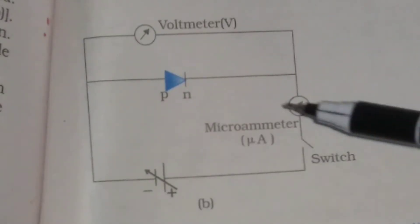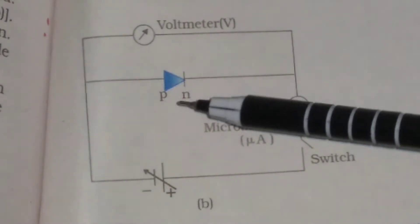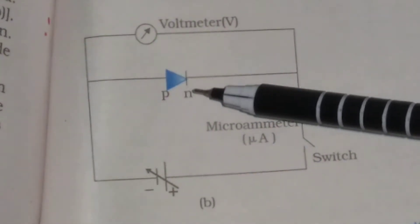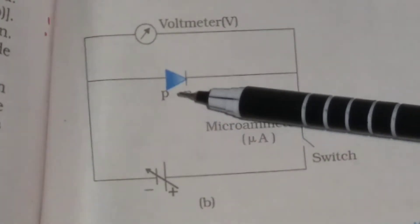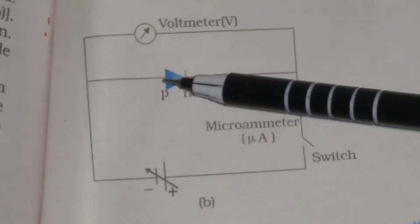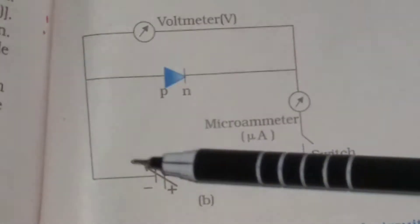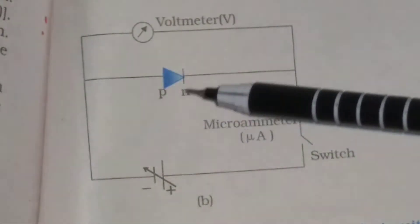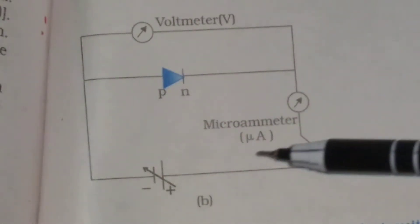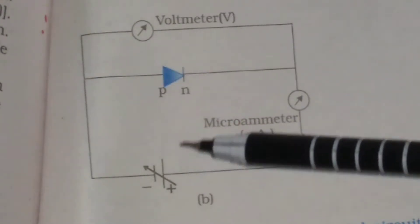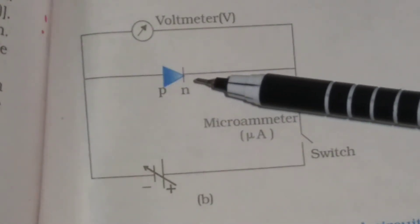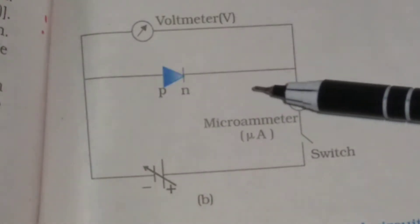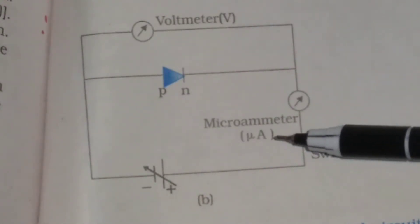This is the circuit arrangement of the P-N junction, or semiconductor diode, when it is reverse biased. In reverse bias, we connect the P-type semiconductor to the negative terminal of the battery and N-type semiconductor to the positive terminal of the battery. In reverse biased condition, we get current of the order of microampere.